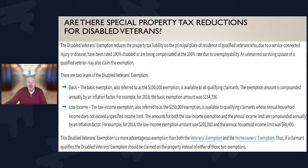If you qualify under the income thresholds, you get an even greater exemption — in 2018 it was $202,000, but you had to make less than $60,000 as a family. If you are a disabled veteran, thank you for your service. You deserve this — if you're not taking advantage of it, reach out to the county and apply for the disabled veteran tax exemption. At the very least you'll save over a hundred thousand dollars off the taxable value of your home.